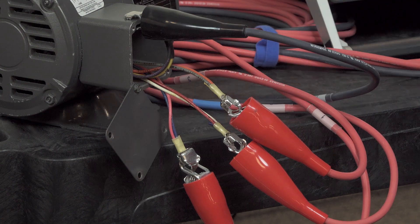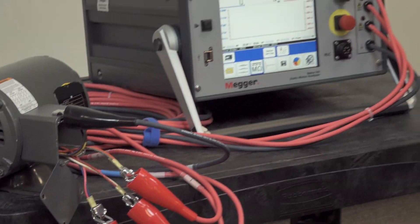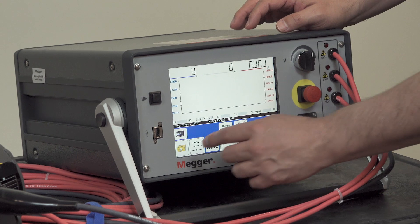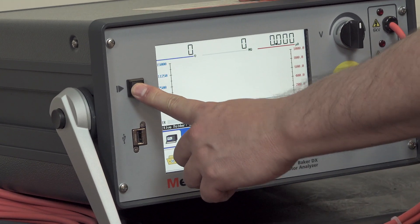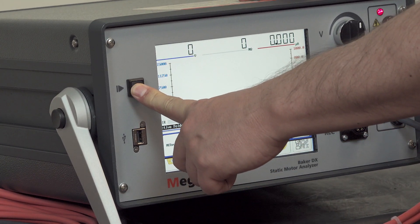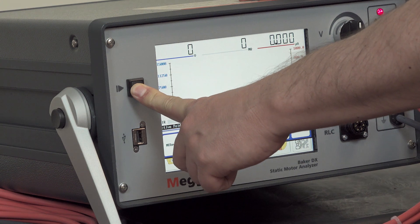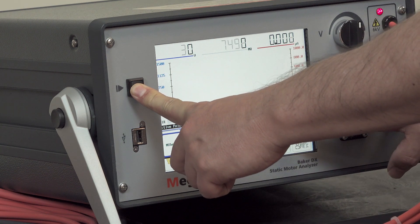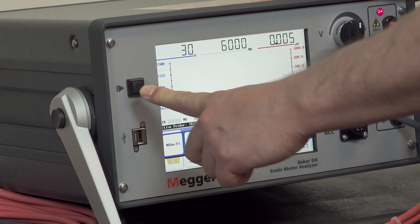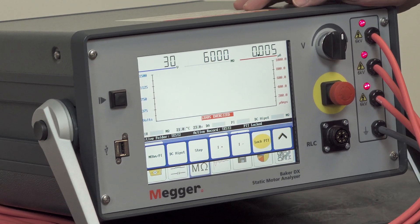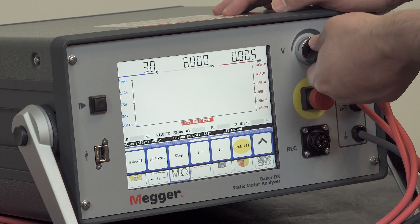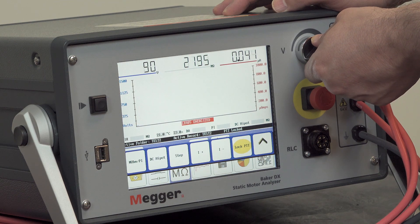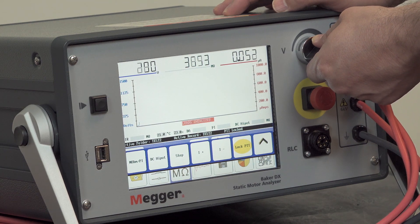We're ready to commence our testing, so we're going to momentarily press the push to test button, and then we're going to press the lock push to test button and release the push to test button. And now we'll raise the voltage to the desired test voltage. In this case, the 460 volt motor, we'll test at 500 volts.